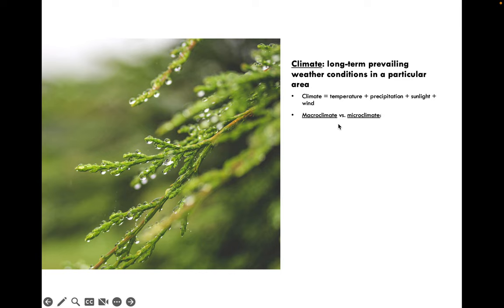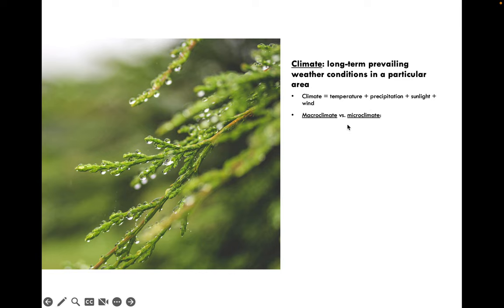Microclimate is different. Imagine you're an ectotherm like a snake that's just woken up and needs to warm up. You'd probably look for a sunny place — a dark rock or a roadside exposed to the sun — because it will be warmer there than in the shade under a tree. Those small-scale temperature differences are called microclimate: slightly different conditions in different places on the same landscape, including tiny differences in temperature, precipitation, humidity, sun, or wind exposure.